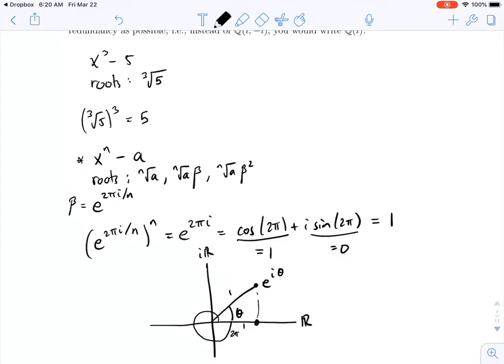Well, when I take nth root of a to the nth, I get a. If I take nth root of a times beta to the n, well, nth root of a to the n is a, and beta to the n, we just said beta to the n is 1. So, this is actually just a again.